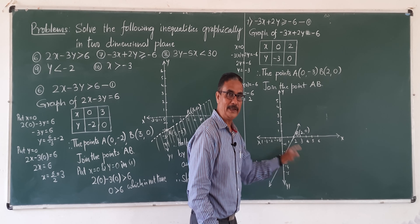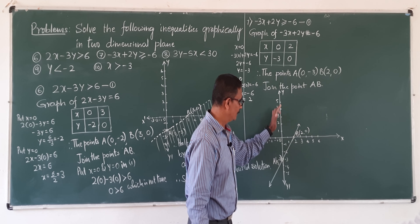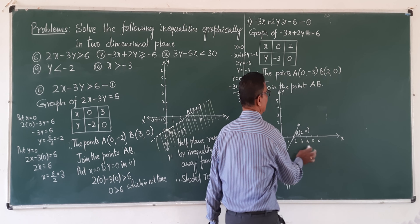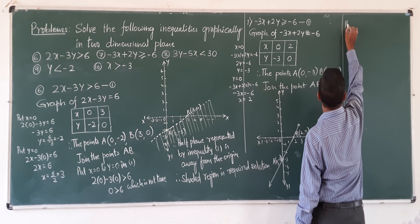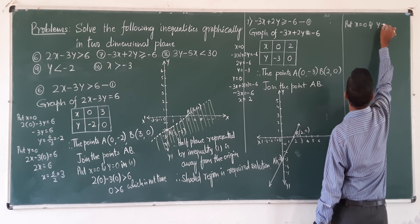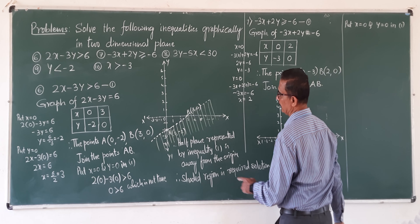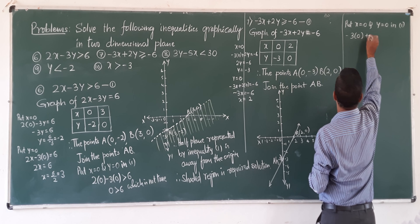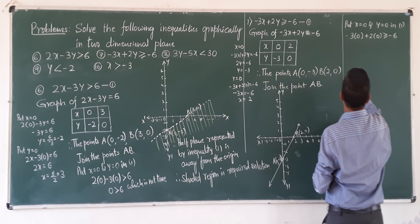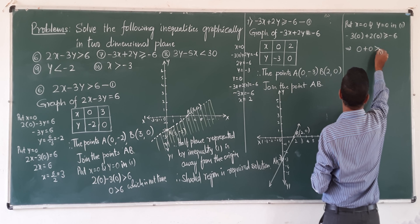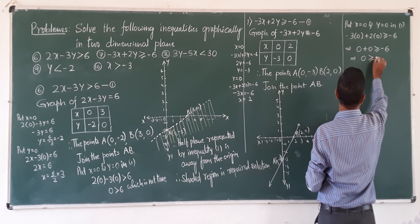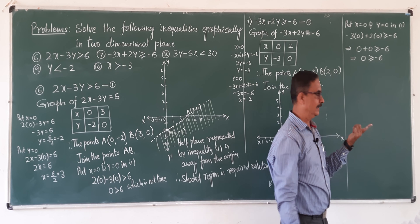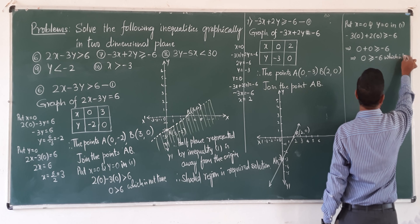We got two planes: lower half plane and upper half plane. Go for the next step: put x equal to 0 and y equal to 0 in the given inequality. Minus 3 into 0 plus 2 into 0 greater than or equal to minus 6 — that is 0 greater than or equal to minus 6. Is 0 greater than minus 6? Yes, which is true.